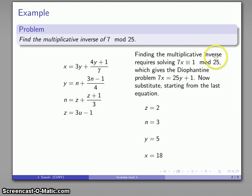Now, again, we're working mod 25, so if I ended up with something that was larger than 25, I can reduce it by subtracting multiples of 25 to get something that's in the correct range. But x equals 18 is our multiplicative inverse.